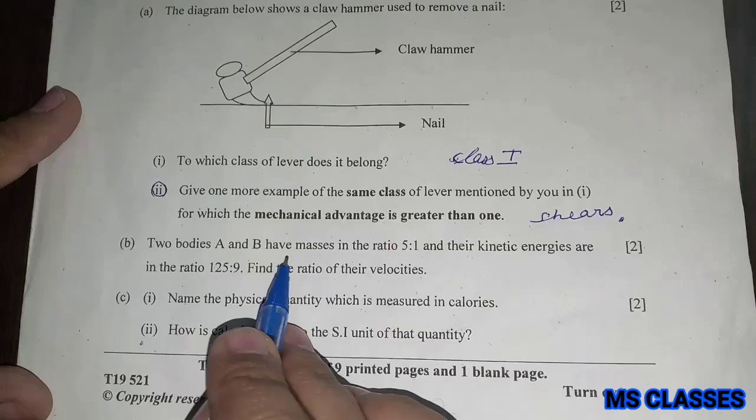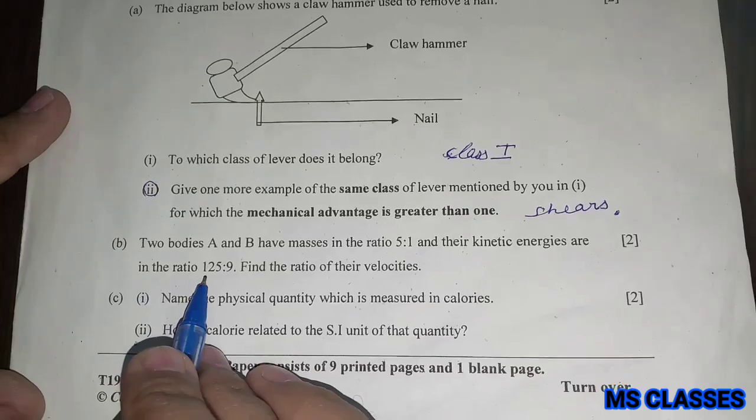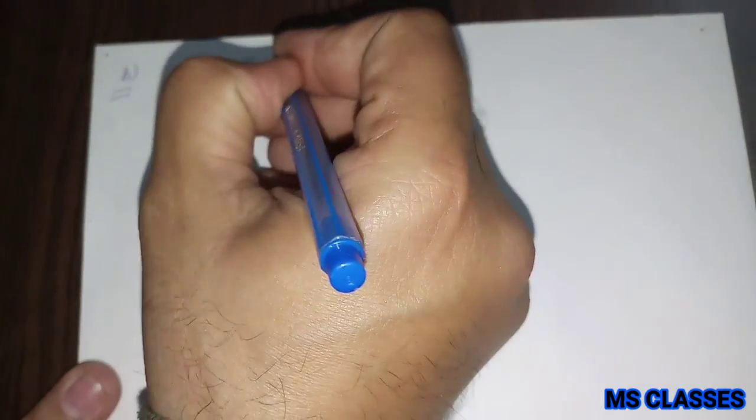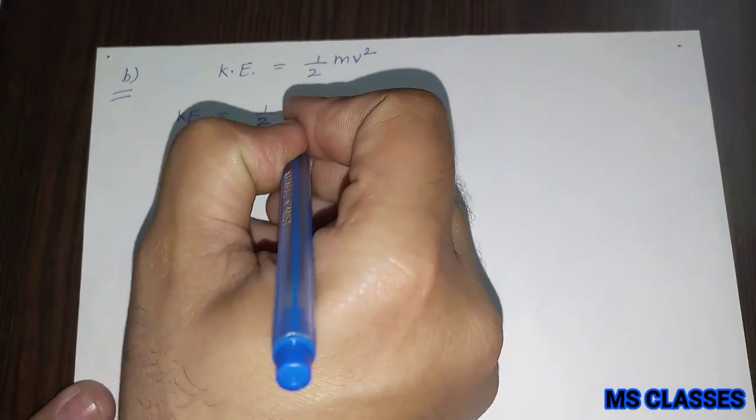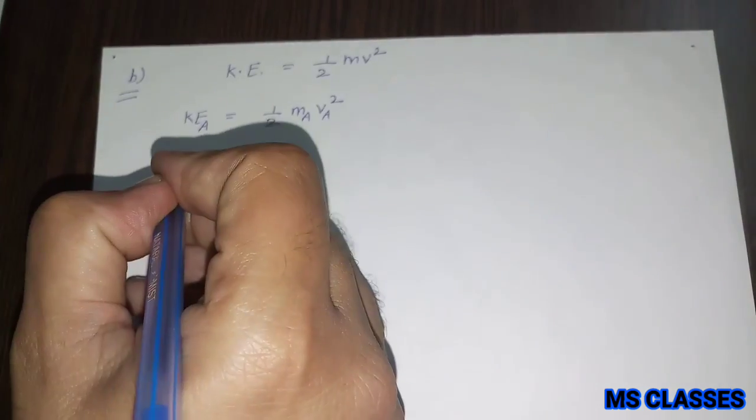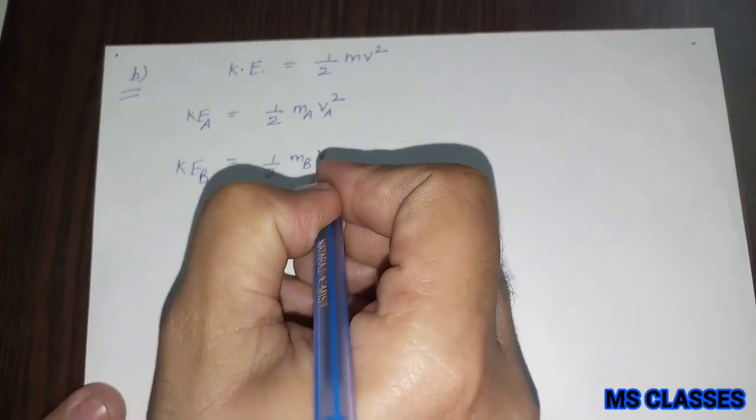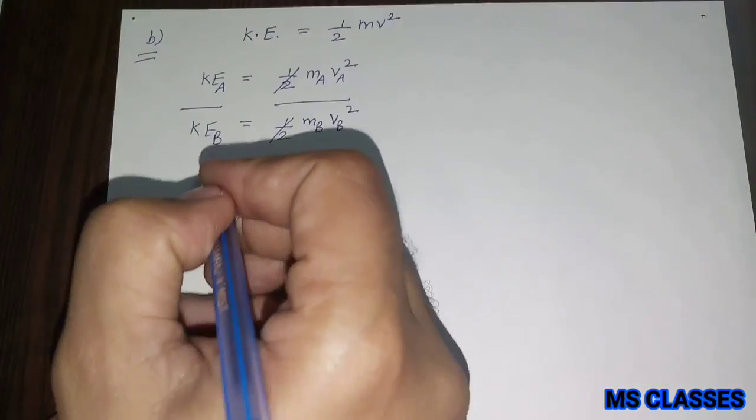Second, two bodies A and B have masses in the ratio 5 is to 1 and their kinetic energies are in the ratio 125 is to 9. Find the ratio of their velocities. According to the question, as we know that kinetic energy is half MV square, so kinetic energy for the first body is half MA VA square and kinetic energy for the second body is half MB VB square.